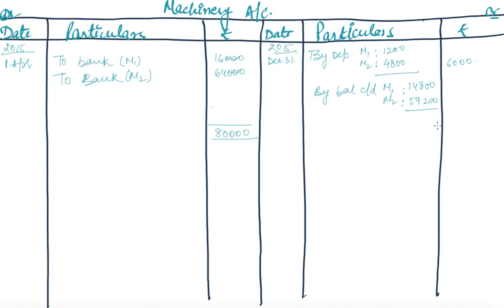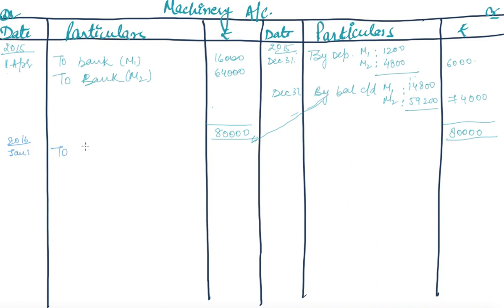After charging depreciation, the closing balances are: M1 = 16,000 − 1,200 = rupees 14,800; M2 = 64,000 − 4,800 = rupees 59,200. The total closing balance is rupees 74,000, and both sides of the account total rupees 80,000. On 1st January 2016, these balances are brought down as Balance b/d: M1 rupees 14,800 and M2 rupees 59,200, totalling rupees 74,000.